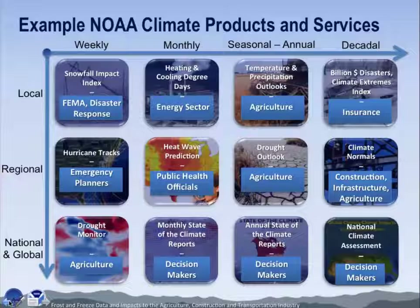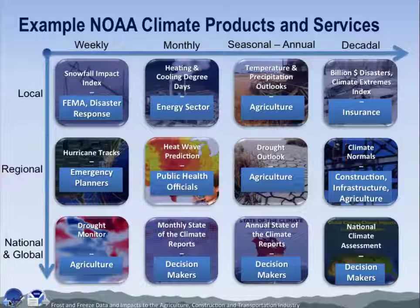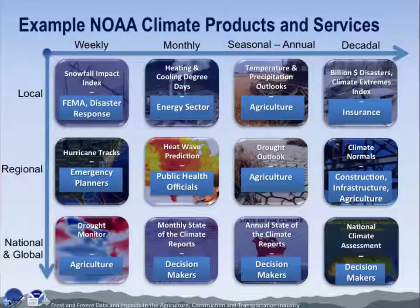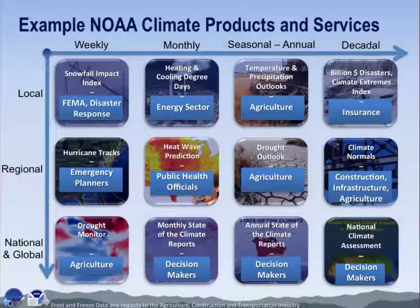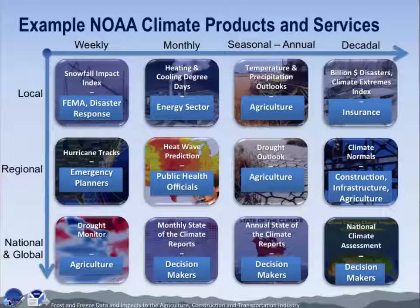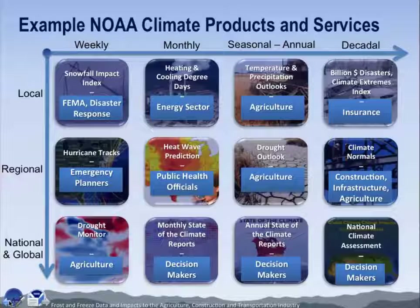Looking at this chart, the top text talks about the products that we have — drought outlook, heat wave prediction, hurricane track, drought monitor, and climate reports are all examples of products available at NCDC that can be accessed through the NCDC website. And then the blue boxes indicate who we recognize as some of the users of those particular products.